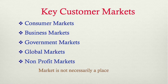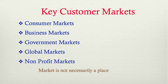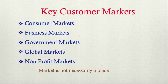Then there is the business market — the industry. For example, Colgate sells products, but in order to manufacture those products, Colgate needs raw materials, so they buy something. That is business to business. Then there are government markets — for example, Tata Steel sells lots of steel to Indian Railways, so Indian Railways is an example of a government market.